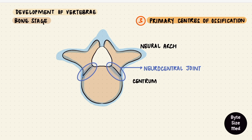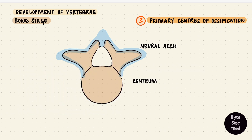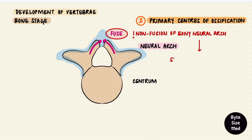Once the primary centers fuse, some parts remain cartilaginous, like the spinous process. Between the centrum and the neural arch is a cartilaginous neurocentral joint, which allows the vertebra to grow along with the growing spinal cord. The vertebral body is formed mostly by the centrum, but the posterolateral portions are from the neural arch — they fuse at the neurocentral joint, creating the neurocentral line. The bony halves of the vertebral arch also fuse. If they don't — and it is just the bone that hasn't fused while the spinal cord is intact — that is called spina bifida occulta, or a cleft vertebra.